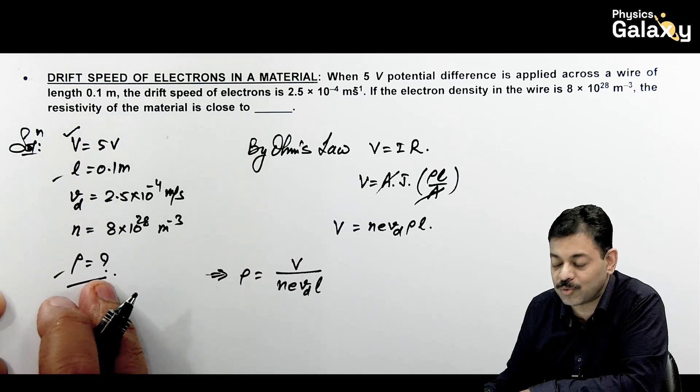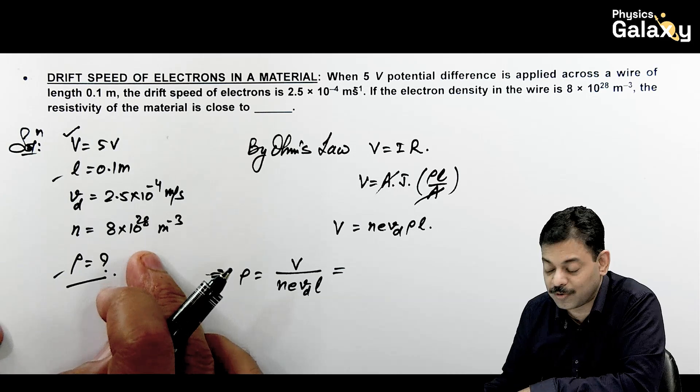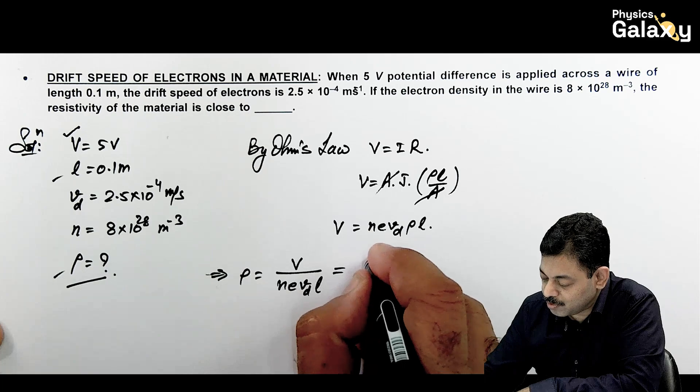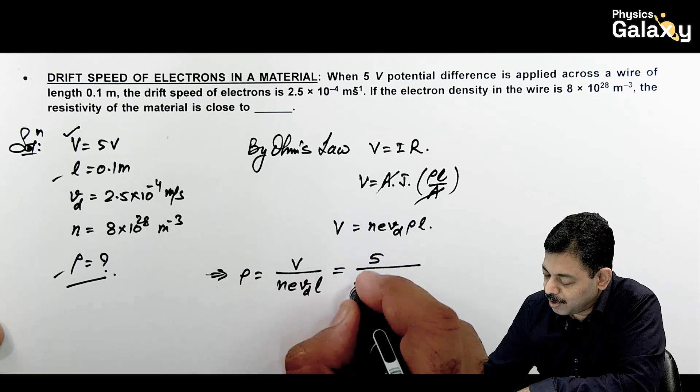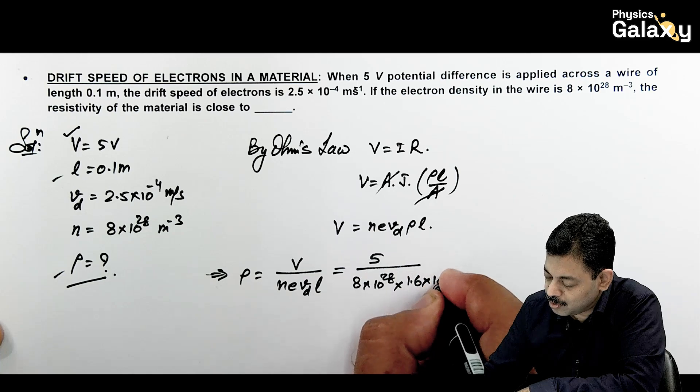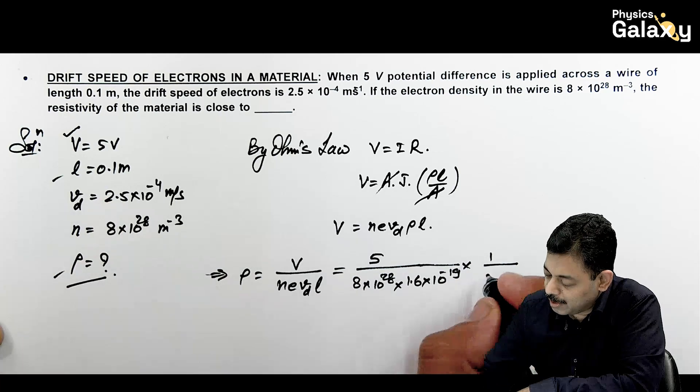All the parameters are given to us. You can substitute the value. Certainly at this point you can see there might be some non-standard values. But I want you to calculate the result, because this question has already been asked in JEE Main. So this 5 volt divided by N is 8 into 10 to power 28, times 1.6 into 10 to power minus 19. This is 1 by VDL, this is 0.1 into 2.5 into 10 to power minus 4.